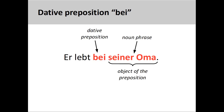The preposition 'Bei' is also used to express being at a person's place of residence or living with this person. For example, 'Er lebt bei seiner Oma' — he is living with his grandmother.